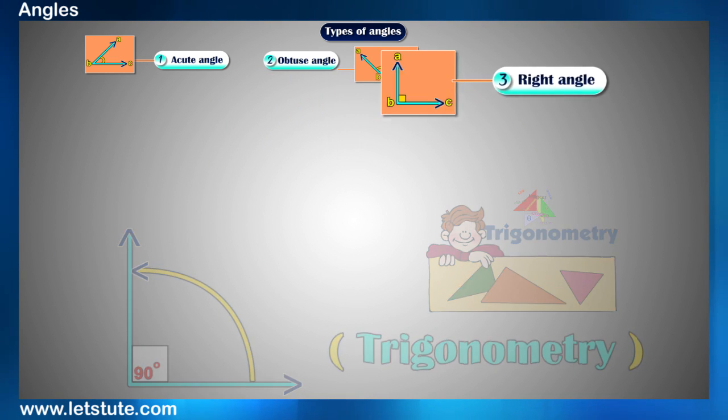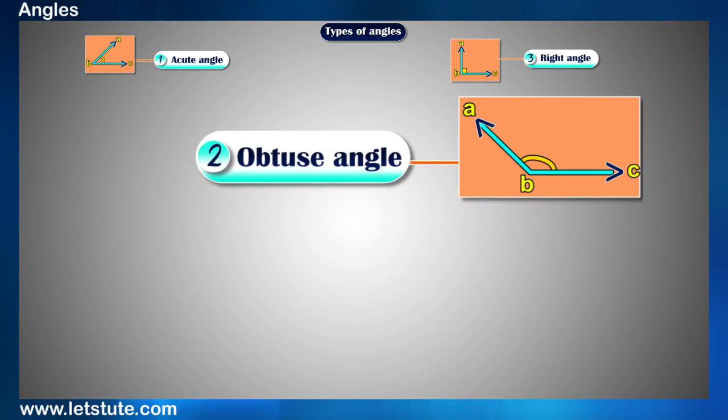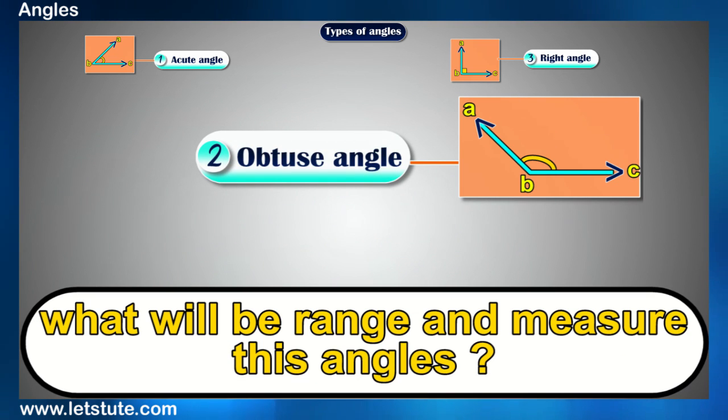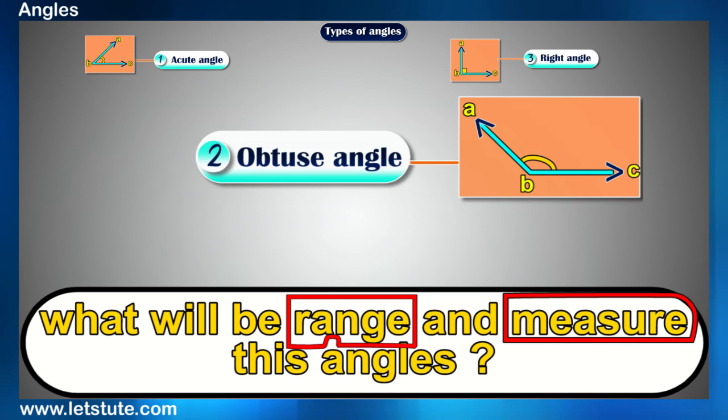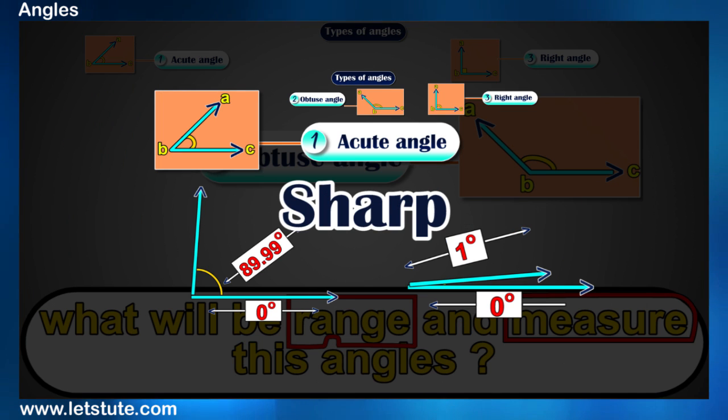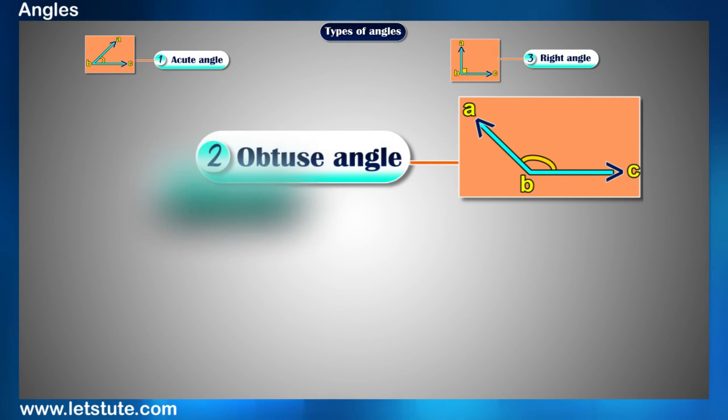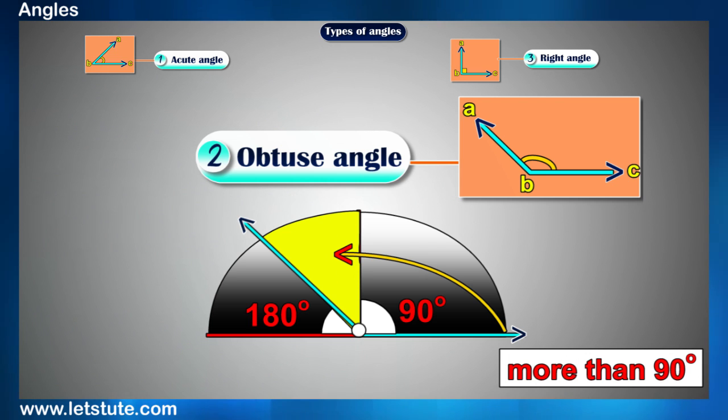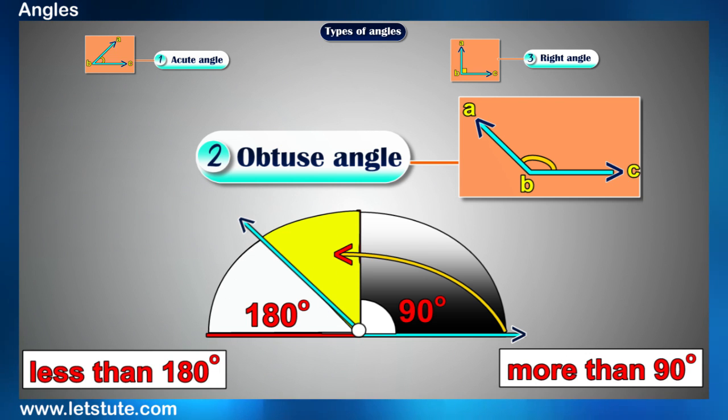Now, the last one is obtuse angle where obtuse means blunt. So can you guess what will be the range or what will be the measure of these angles will be? Right, since the acute was sharp and it was less than 90, so here obtuse means blunt so it will be more than 90 and it will be less than 180 degrees.